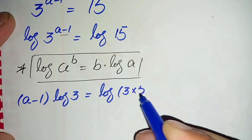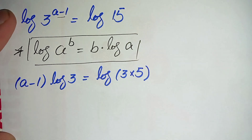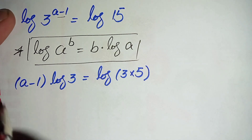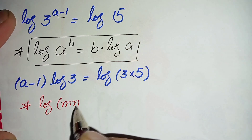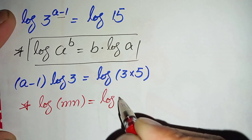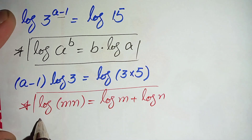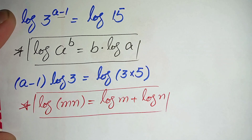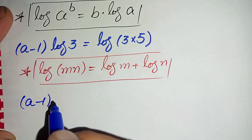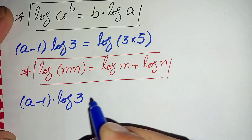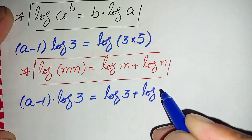On the right hand side, log of 3 times 5. We use the log product property: log of m times n equals log of m plus log of n. Applying this property, the right hand side becomes log of 3 plus log of 5. So the equation is now (a minus 1) times log of 3 is equal to log of 3 plus log of 5.